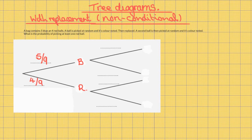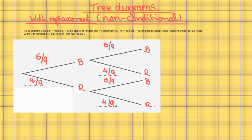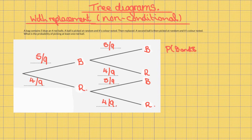Red has the probability of four out of nine. On the second pick you could also get blue or red. Because the ball has been replaced, the probabilities remain the same. Blue is five out of nine, red is four out of nine. Finally, put the outcomes and work out their probabilities.